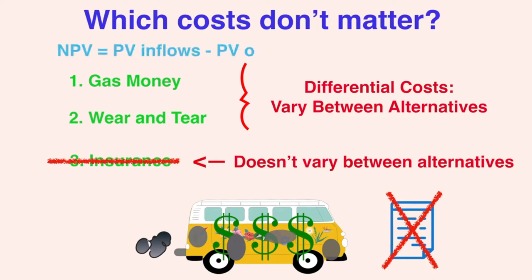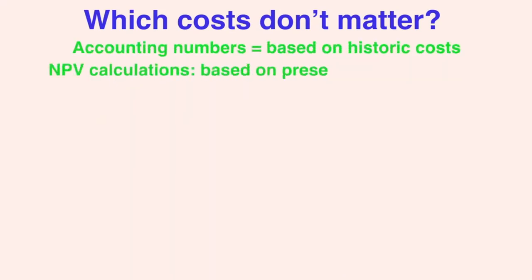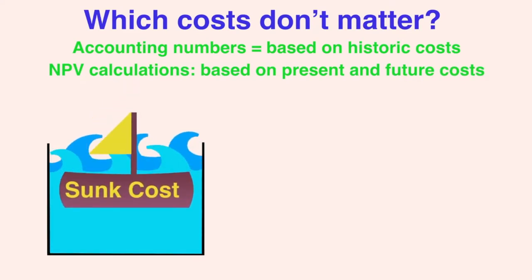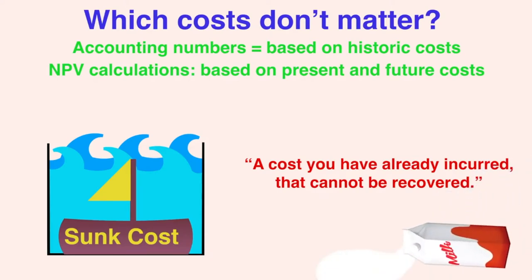NPV calculations implicitly compare the value added from an investment to the status quo, not to some magical world where nobody spends any money. Accounting numbers are based on the past, and so they include costs that should be ignored for decision-making. One type of non-differential cost many people mistakenly include in NPV calculations is a sunk cost. A sunk cost is a cost you've already incurred that is not recoverable, regardless of what decision or investment you choose. The expression 'don't cry over spilt milk' sums it up nicely, as does 'don't throw good money after bad.' It can be hard to ignore sunk costs — sometimes ignoring them can feel wasteful or like you're giving up. But since we can't change the past, it truly is rational to ignore sunk costs.